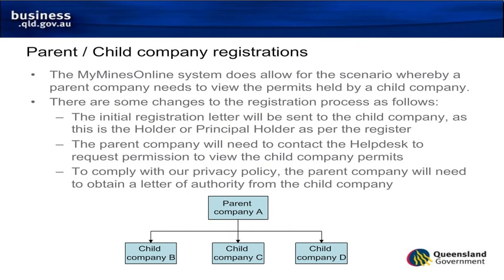The MyMindsOnline system also allows for the scenario whereby a parent company needs to view the permits held by a child company. There are some changes to the registration process: the initial registration letter will be sent to the child company as this is the holder or principal holder as per the register. The parent company will need to contact the help desk to request permission to view the child company permits, and to comply with our privacy policy, the parent company will need to obtain a letter of authority from the child company.